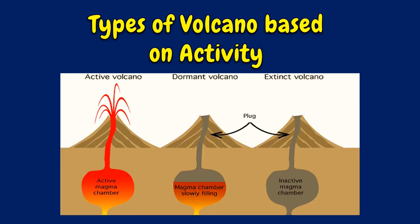Volcanoes based on activity are categorized into three: active, dormant, and extinct. Active volcanoes are classified as active if at that present time they are expected to erupt or are already erupting. Dormant volcanoes are not erupting or predicted to erupt in the near future. Extinct volcanoes are those that no one expects will ever have another eruption.